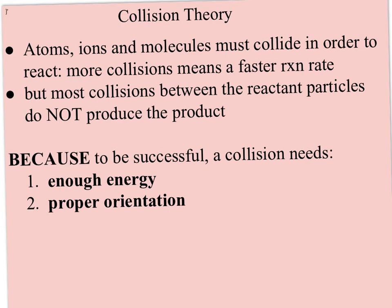Collision theory talks about why or how reactant gets converted to product. Atoms, ions, and molecules have to collide in order to react. So more collisions means a faster reaction rate. But most collisions actually do not produce the product, because besides colliding, a collision has to have enough energy, known as activation energy, and it has to hit with what we call the proper orientation or hit in the correct spot. Kind of like when you're playing a sport like tennis or golf, when you hit what's called the sweet spot, you really have a nice successful hit for your tennis game or your golf game.